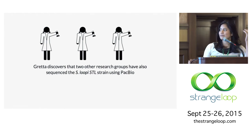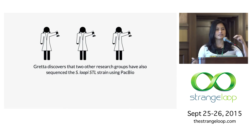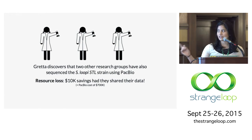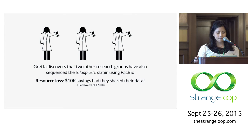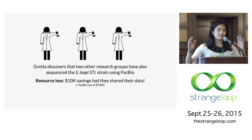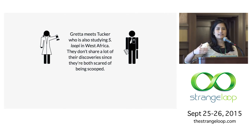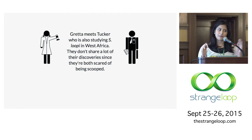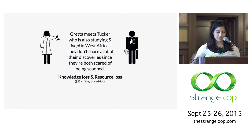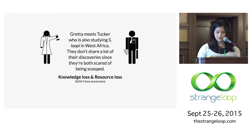Greta discovers that two other research groups also sequenced the S-Loop-I STL strain using that special PacBio — they're using the same data. That means there was at least a $10,000 savings they could have had if they'd shared their data, plus the cost of the PacBio machine itself at around $700,000. She also meets Tucker, who is also studying S-Loop-I in West Africa, but they're scared of being scooped — in academia, the first person to publish gets the credit, so they're in competition and don't want to share. So there's resource loss, knowledge loss — 25K lost.